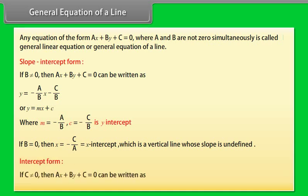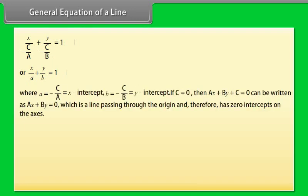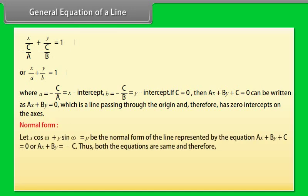Intercept form: If c ≠ 0, then ax + by + c = 0 can be written as x/a + y/b = 1, where a = −c/a is the x-intercept and b = −c/b is the y-intercept. If c = 0, then ax + by = 0, which is a line passing through the origin and therefore has zero intercepts on the axes.